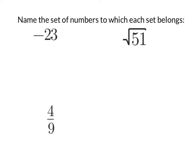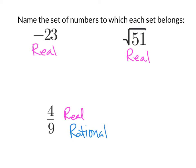Here we have three numbers and we want to identify the types of numbers they are in every way possible. First, every number we're dealing with is a real number — negative 23 is real, square root of 51 is real, and four-ninths is real. Next, after being real, it breaks into rational or irrational. Irrational numbers can't be written as fractions, so 4/9 is rational. Negative 23 is also rational — it can be written as negative 23 over 1. But the square root of 51 is the only irrational one — type it in a calculator and you'll see no pattern.